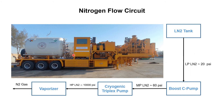Then nitrogen exits the C pump and moves towards this triplex pump, also known as cryogenic triplex pump. We can simply say that this boost C pump is providing feed to this cryogenic triplex pump. The pressure of this liquid nitrogen after the boost pump is approximately 60 psi. The purpose of this boost pump is just to increase the pressure of liquid nitrogen stored in this tank so that we can have a continuous supply to this triplex pump.